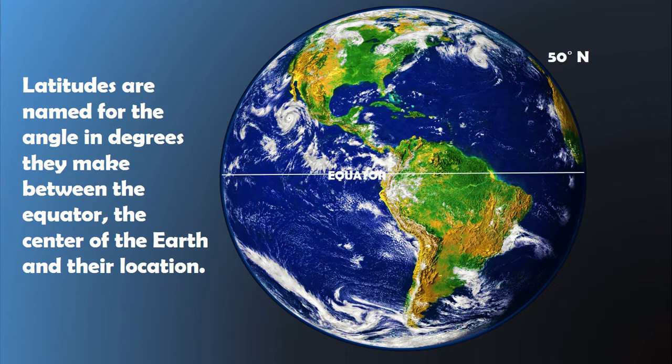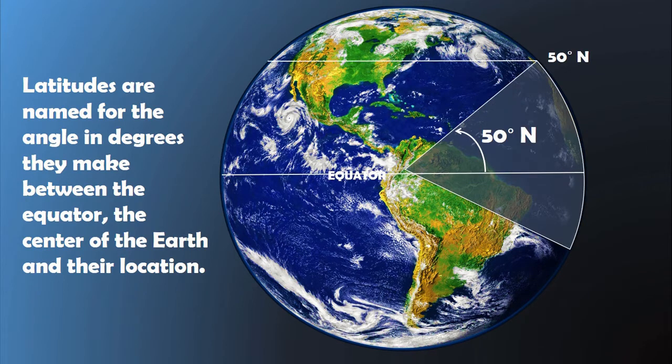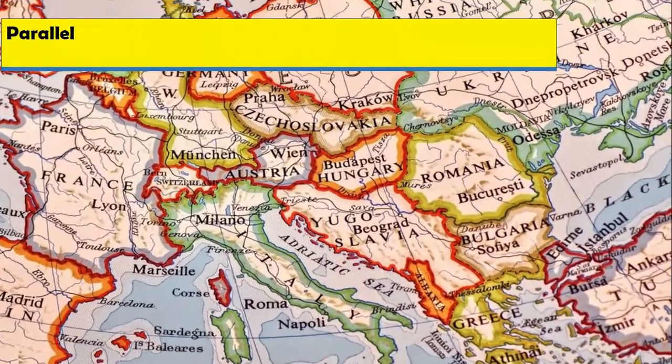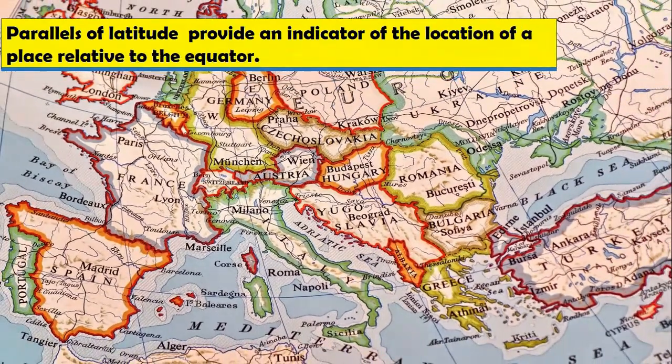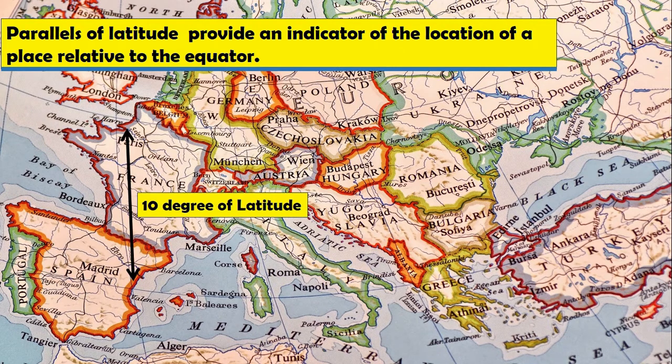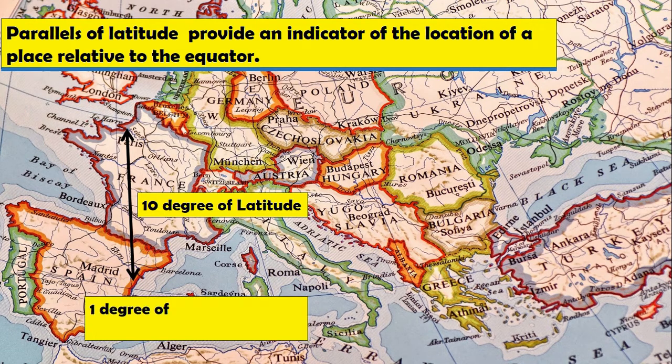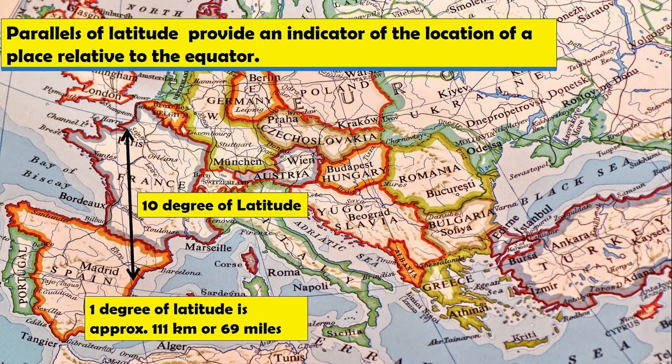Here, the angle from the center of the Earth and equator make the latitude of 50 degrees north and 35 degrees south, depending on whether the location is north or south of equator. Parallels of latitude provide an indicator of the location of a place relative to the equator. Here these two latitudes are located at a difference of 10 degrees. One degree of latitude is roughly equal to 111 kilometers or 69 miles on Earth's surface.